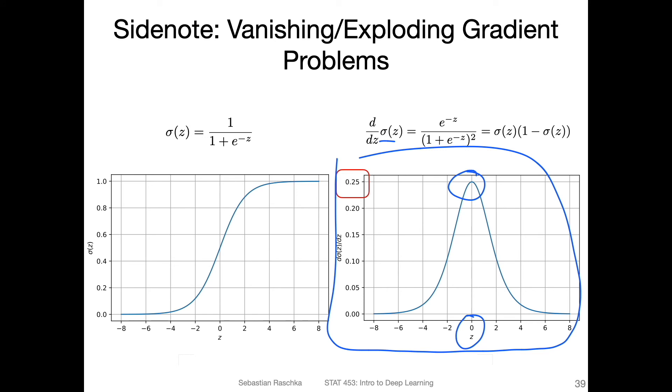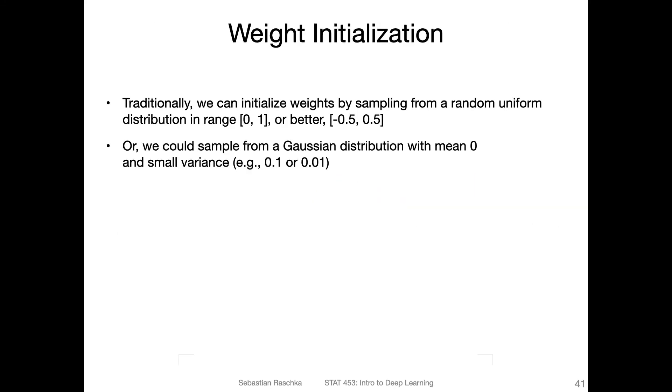If you have inputs or the net inputs that are small, let's say in this range, or large in this range, then the gradient will be even smaller. So you want to have something that is at least centered at zero. You can initialize your weights from a random uniform distribution, for example, in the range 0 to 1. But if you use a logistic sigmoid, it might be better to do it in a range between -0.5 and 0.5, or maybe even smaller, -0.05 and 0.05.